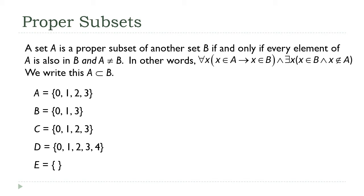So we have a next definition here. And this is almost the same as a subset, just going to add one extra piece. It starts off the same way: A is a proper subset of B if and only if every element of A is also in B, and this is the new part: A is not equal to B. So in practical terms, what that's saying is every element of A is in B and B has at least one extra element that isn't in A.